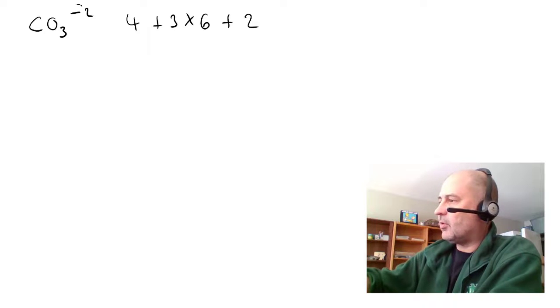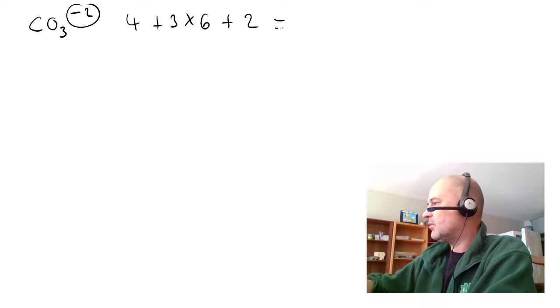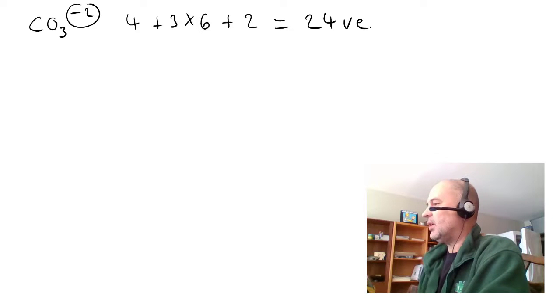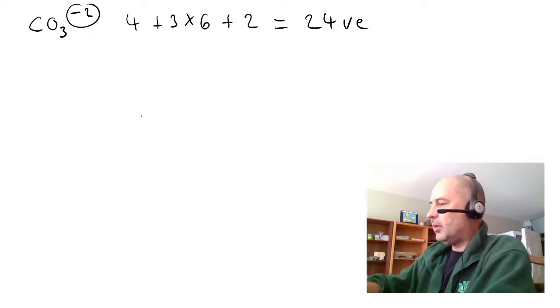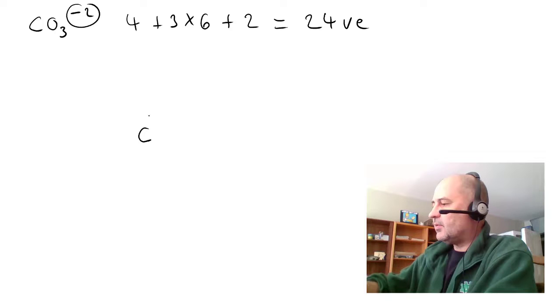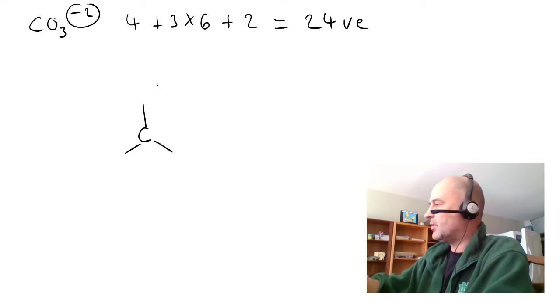which gives us a total of 24 valence electrons. We put carbon in the center. We assume three single bonds, which consumes six electrons.